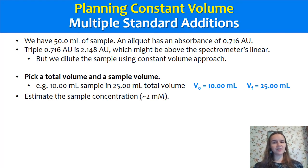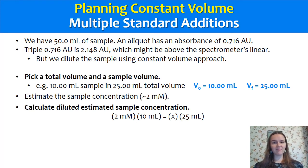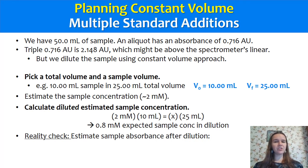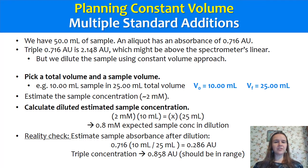We need an estimate of our sample concentration — let's say about 2 millimolar. We calculate the diluted estimated sample concentration using M1V1 = M2V2: 2 millimolar in 10 mils of sample diluted to 25 mils total gives 0.8 millimolar expected sample concentration in the diluted sample. It's that diluted concentration we want to triple. But first, we check that the absorbance is okay. The diluted sample will absorb less because it's more dilute — about 0.29 absorbance units — and tripling that gives around 0.86, which is probably in the range of the spectrometer.